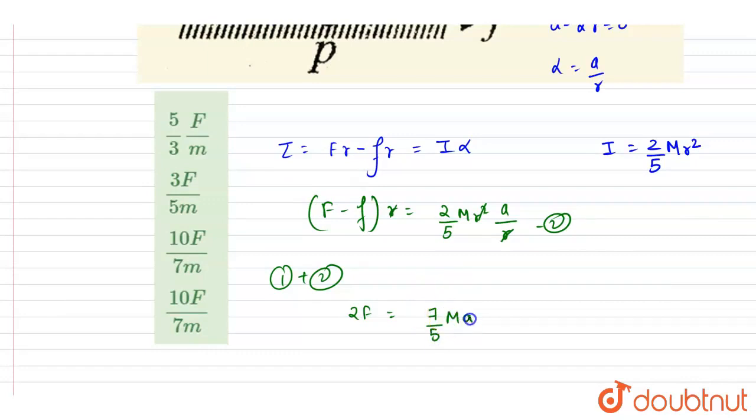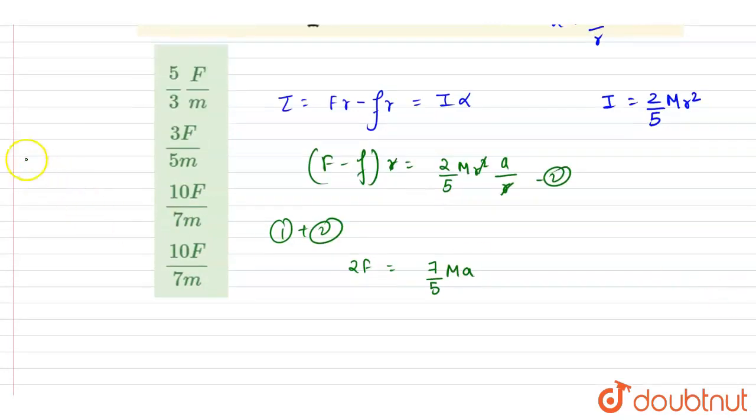We want a, so finally I can write down a equals ten by seven F by m, and this is the answer. Now you can check for the option, here C is the correct one. Thank you.